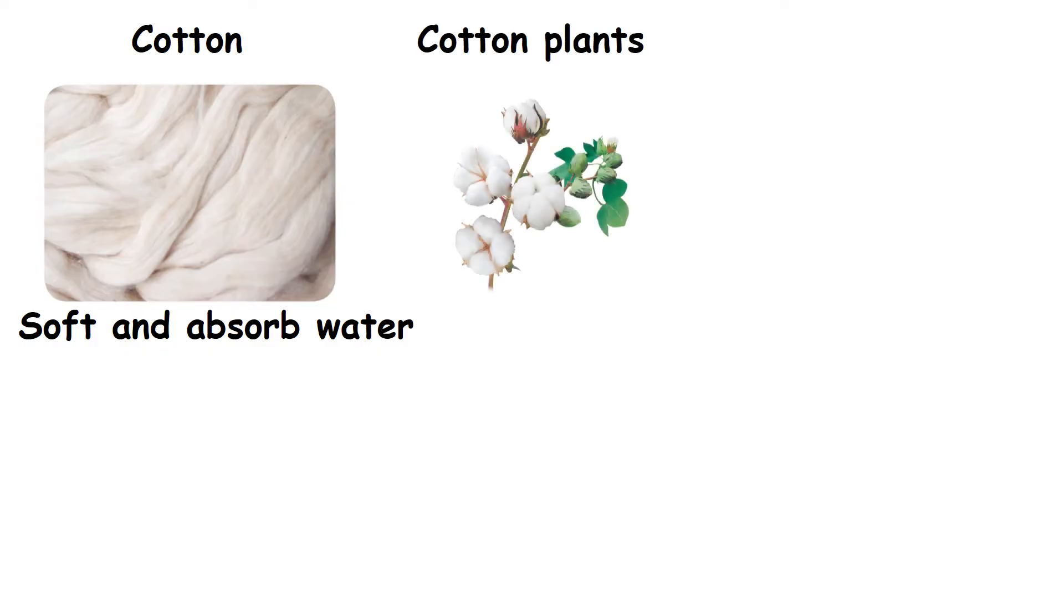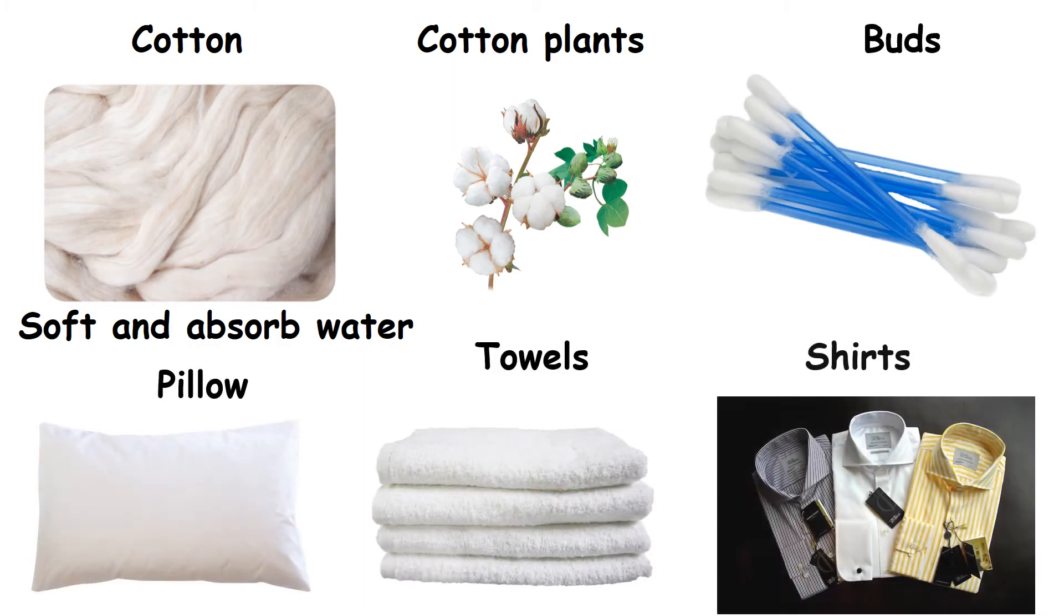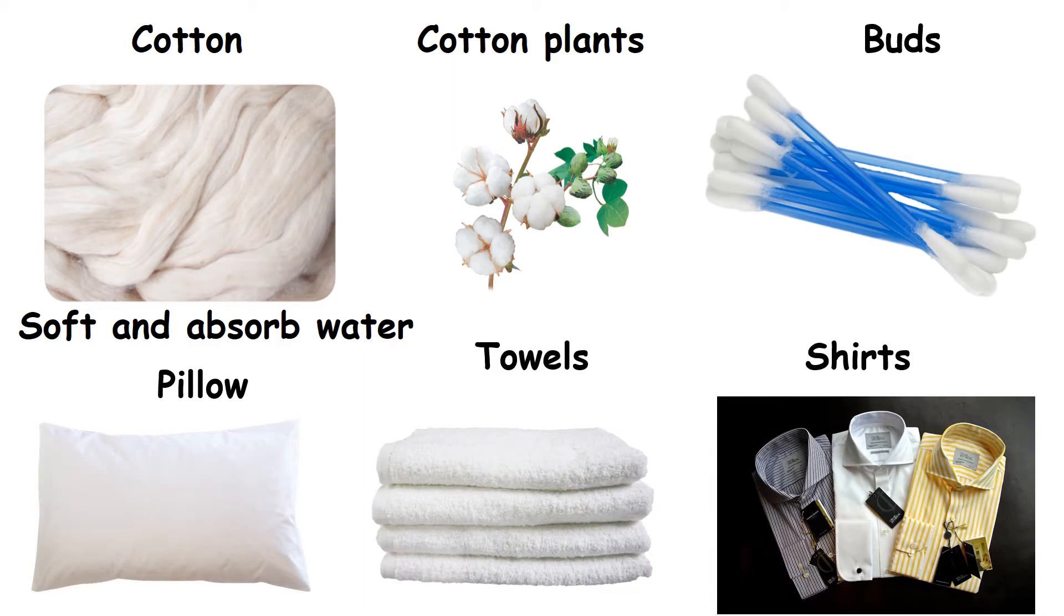Cotton. It is soft and absorbs water. It is obtained from cotton plants. We can make things like butts, pillow, towels, shirts and many more things from it.